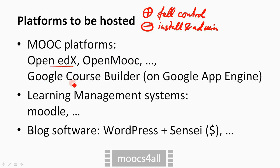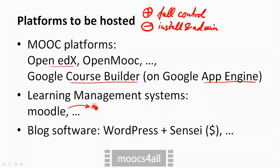Google's solution named Course Builder does not run on arbitrary web space — it's supposed to be hosted on Google's App Engine, meaning in the Google Cloud. Rather than using a dedicated MOOC platform, you can use a standard learning management system such as Moodle and maybe dress up the user interface; this is what's happening on the German platform Moin. And finally, even blog software such as WordPress will do, possibly if you add some functionality for quizzes and so on. There are a number of extensions to WordPress that can do this job, though these do not come for free.